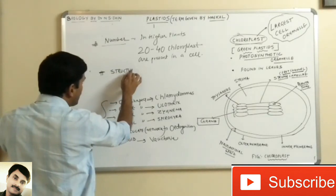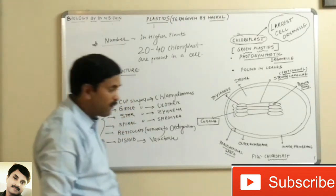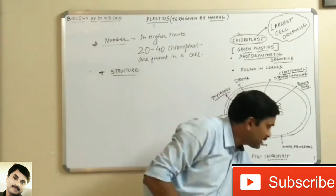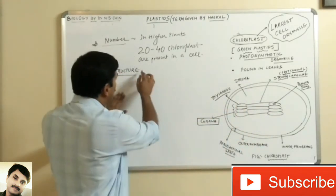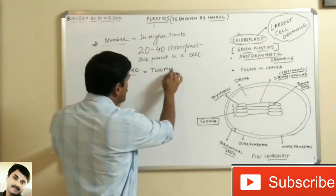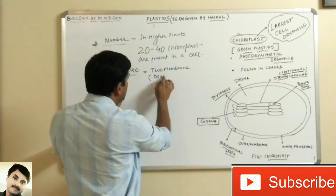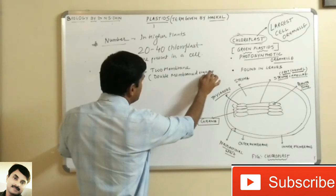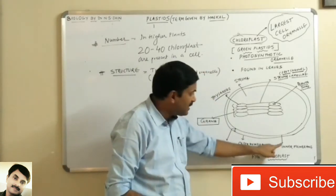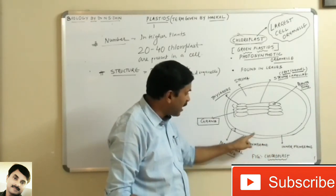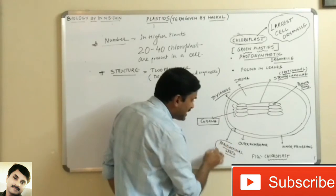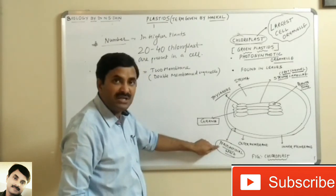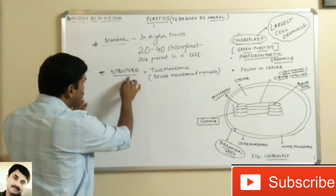Now regarding the structure of the chloroplast, the chloroplast is composed of two membranes — it is a double membrane organelle. It has one outer membrane and one inner membrane, and between the outer and inner membrane there is a space called the periplastidial space.